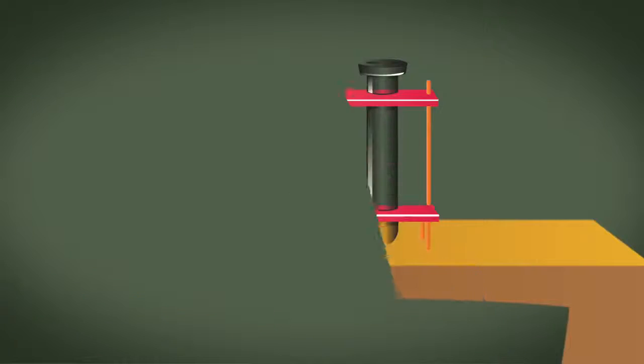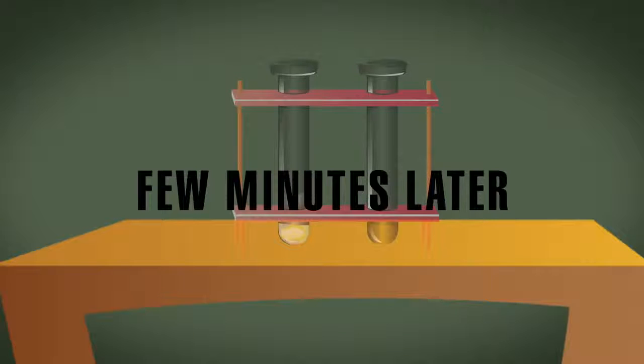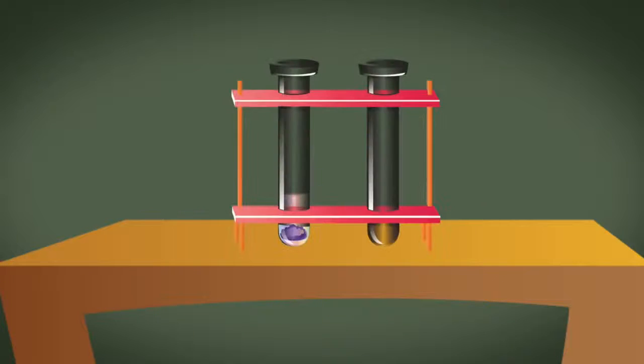Shake well and let the test tube stand for a few minutes. What do you observe? Yes, the content of the test tube turns violet. A violet color indicates presence of protein in the food item.